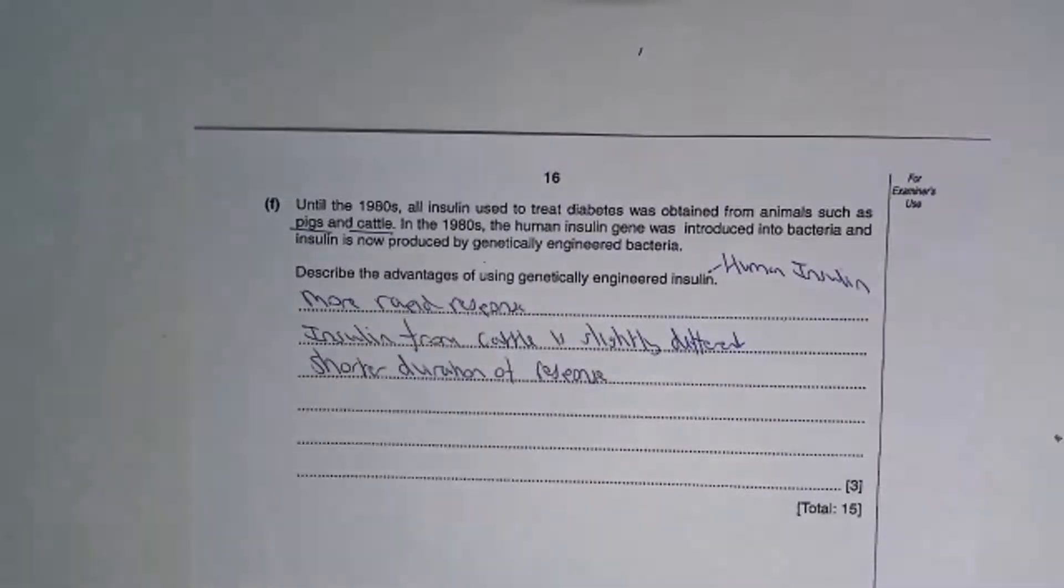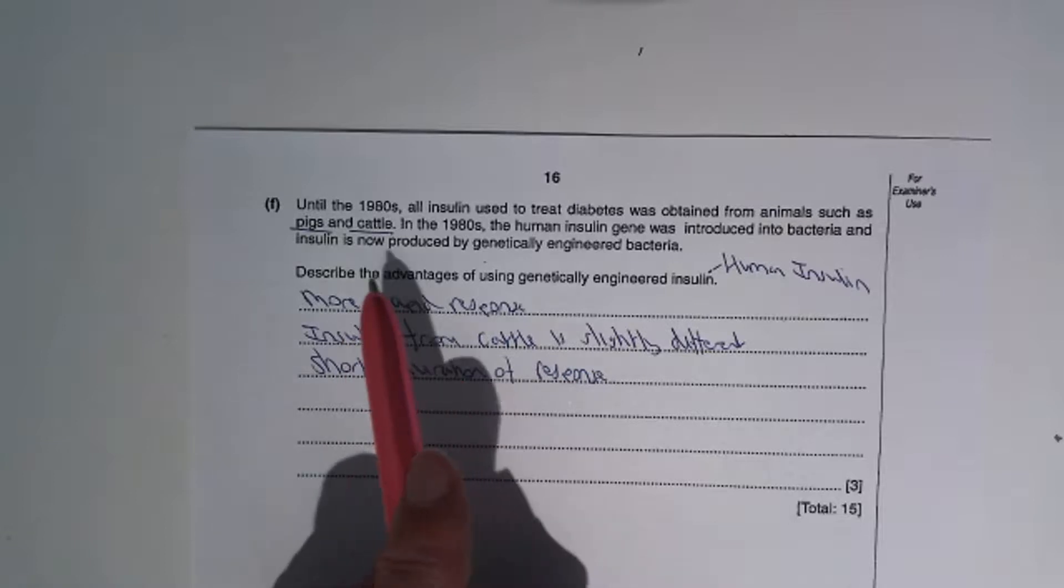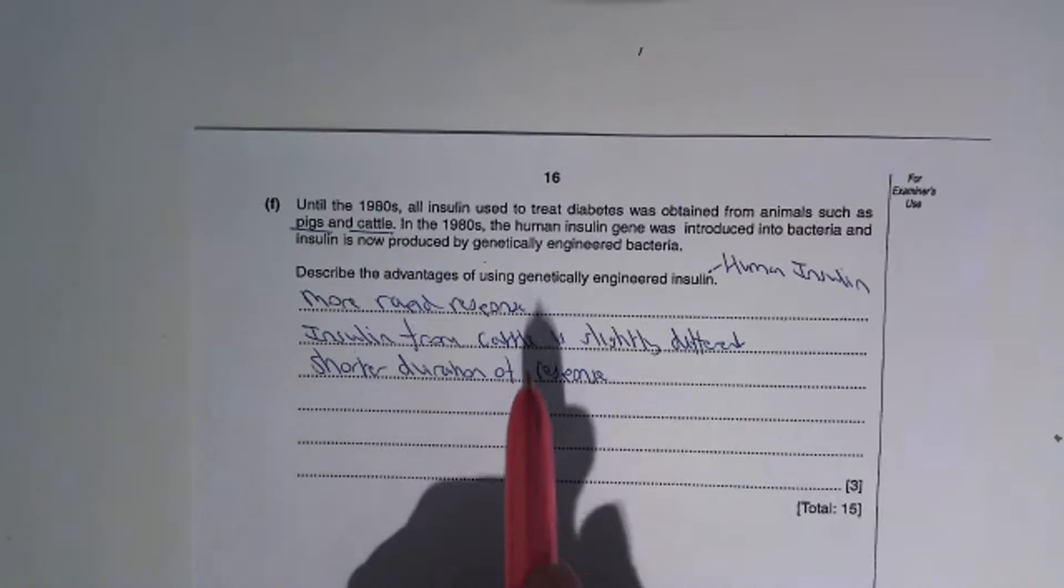Once insulin is released and your blood sugar has gone back to normal, you want the response to stop. With human insulin, that duration stops much quicker. With cattle insulin, the duration lasts a lot longer, which is risky because your blood sugar might go too low.